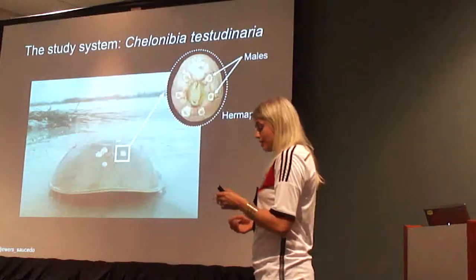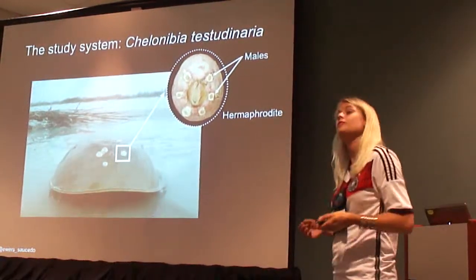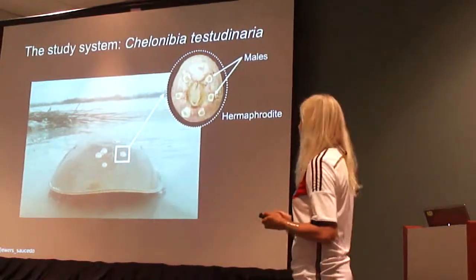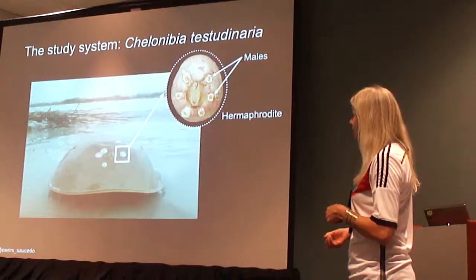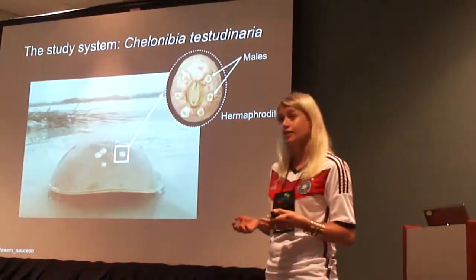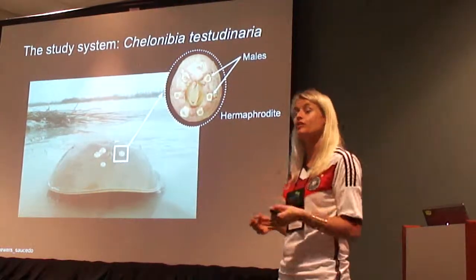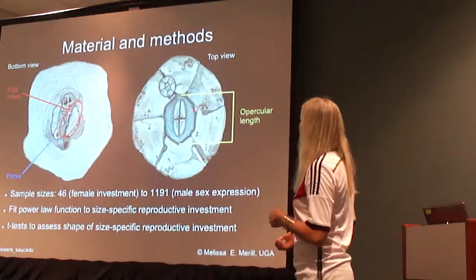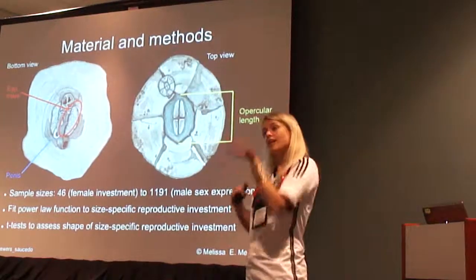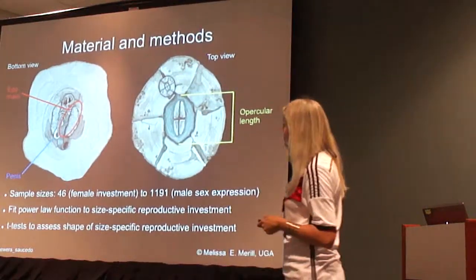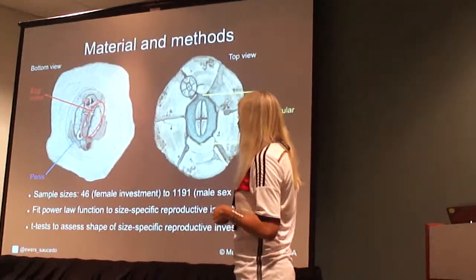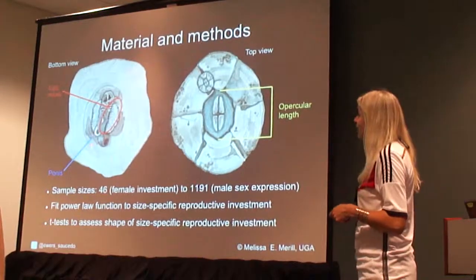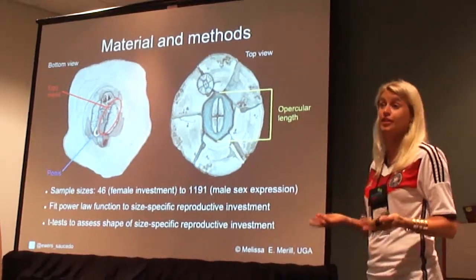We wanted to test these predictions, and our study system is the barnacle Ischnochitonia spinicolumbia testudinariae. This barnacle only lives on other animals, such as horseshoe crabs as shown in this picture, but also blue crabs and sea crabs. The males are always dwarfed — those white spots — and always attached to the hermaphrodite. That is important because it allowed us to distinguish between small hermaphrodites and males. We assessed female reproductive investment by measuring egg volume, and these are the two egg masses that a hermaphrodite will have. Female reproductive investment was only assessed in the hermaphrodites, because males don't have that.